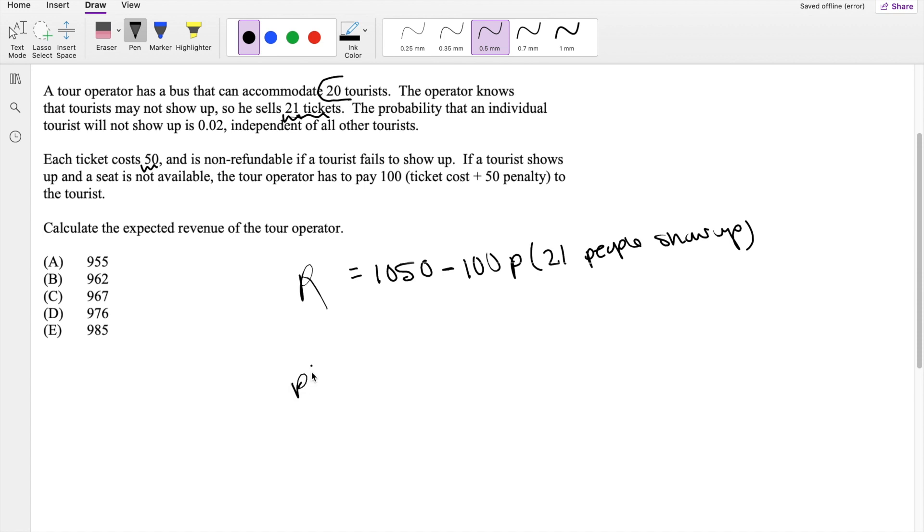What's the probability that 21 people show up? Well, this is exactly just a Bernoulli trial because you can either show up or not show up. And all of them are independent. So then because of that, we can use the formula n choose r, probability to the r, times q to the n minus r.